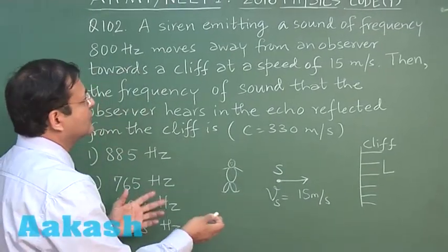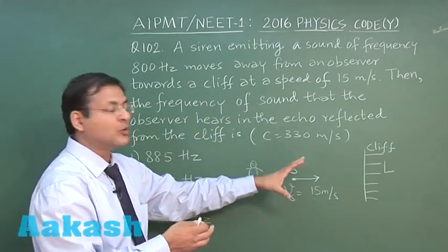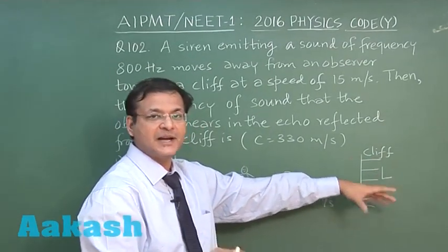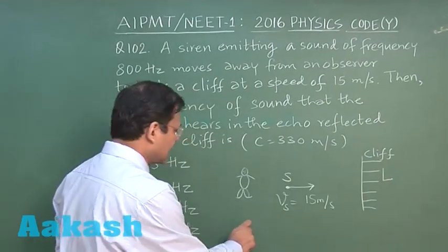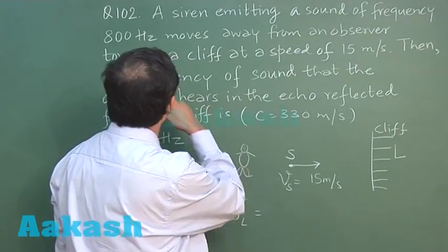So now you have to find out the frequency of sound that the observer hears in the echo reflected from the cliff, that means whatever frequency is heard by the listener, that you have to calculate.